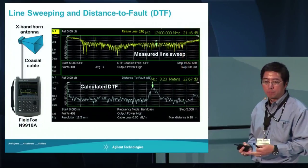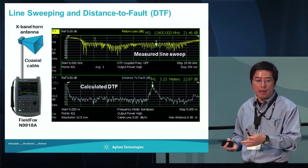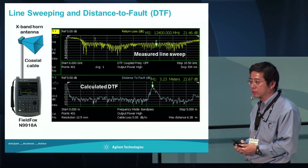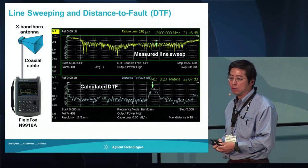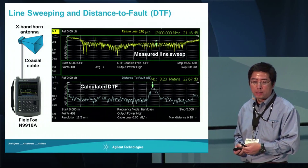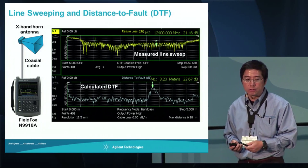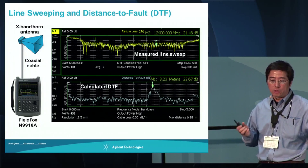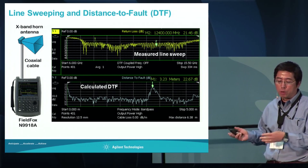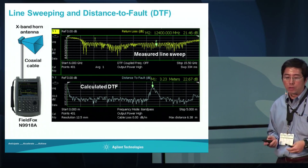Typically we see, in the industry, what we call line sweep or distance to fault measurement. There are a whole bunch of measurements in the line sweep: return loss, distance to fault, and cable loss measurement. That's what we're going to discuss today, and we'll look at both the cable as well as the antenna portion.